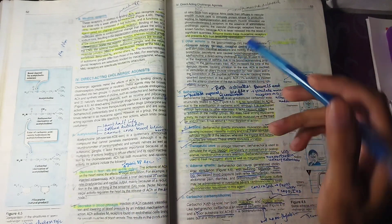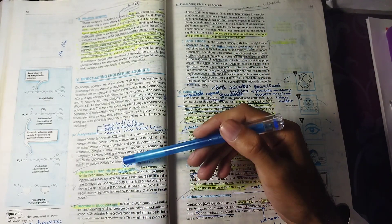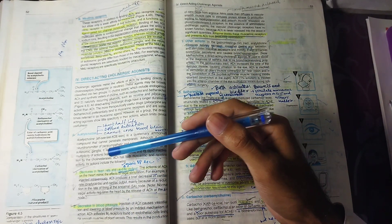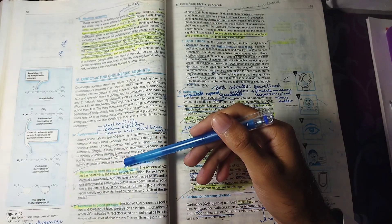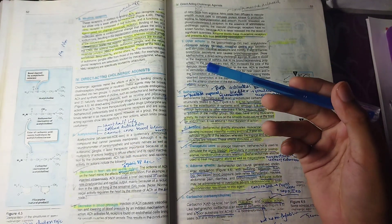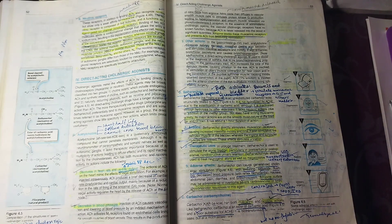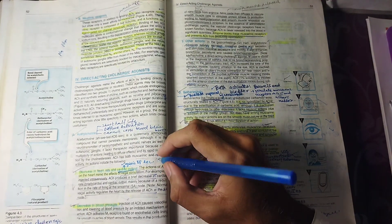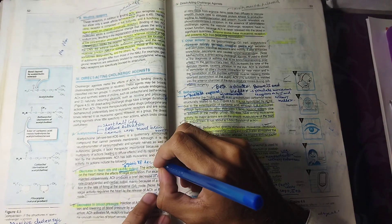After that, some actions are described. First, acetylcholine will reduce heart rate and cardiac output. Why? Because in our heart, there are M2 receptors, and M2 receptors are Gi-type.